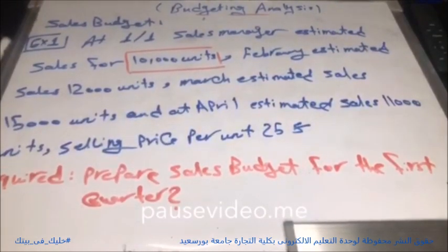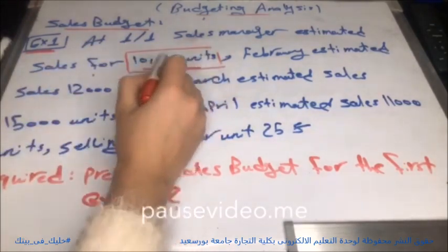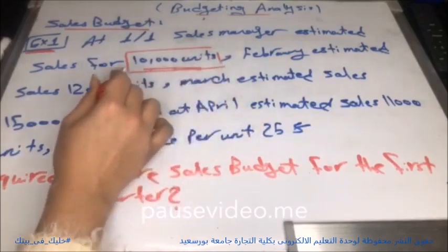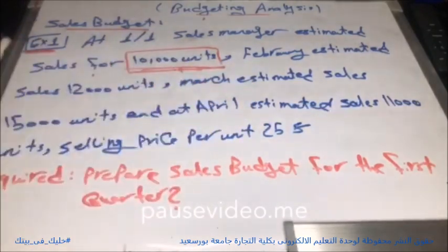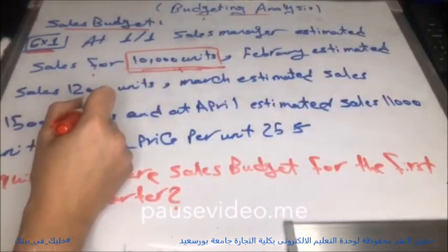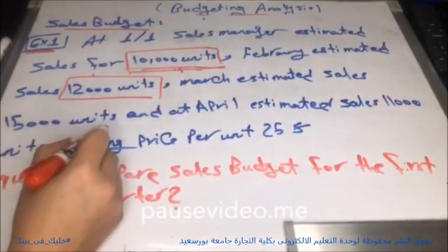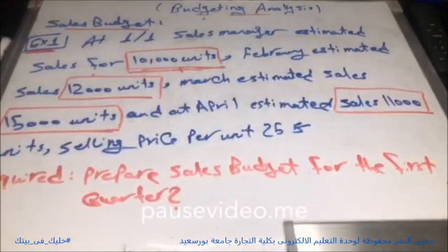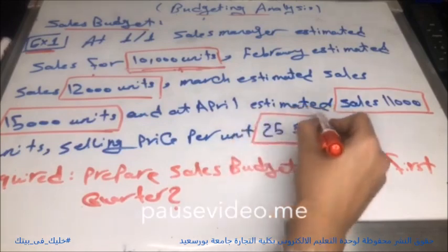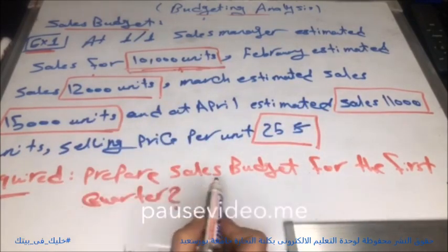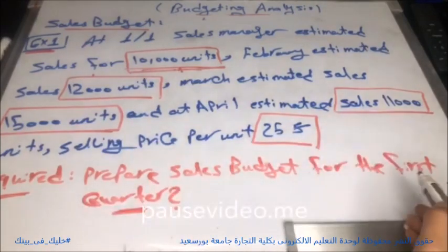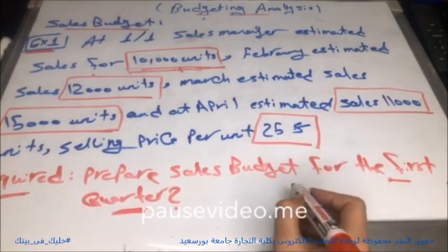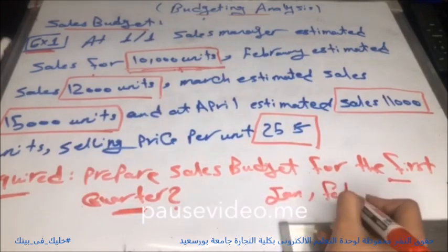Now we will know how the sales budget is prepared. Exercise number one: at January 1st, the sales manager estimated sales for 10,000 units. February estimated sales: 12,000 units. March estimated sales: 15,000 units. April estimated sales: 11,000 units. Selling price per unit is $25. Required: prepare sales budget for the first quarter — meaning the first three months of the year: January, February, and March.